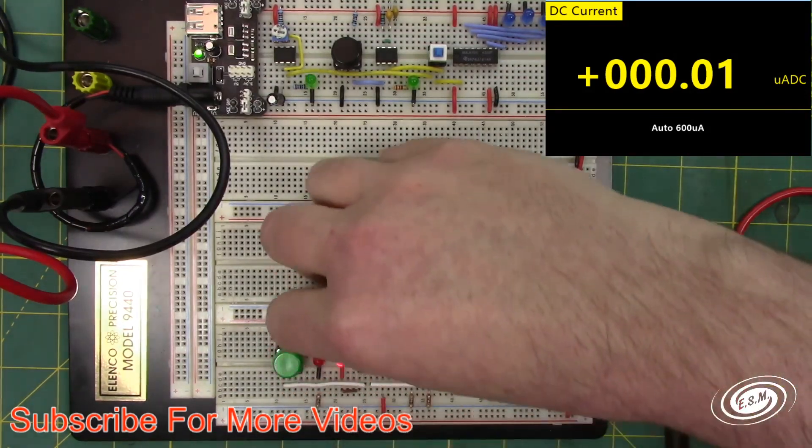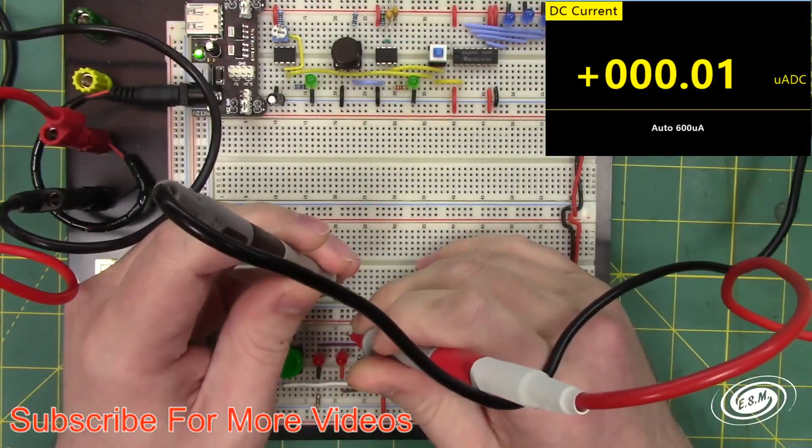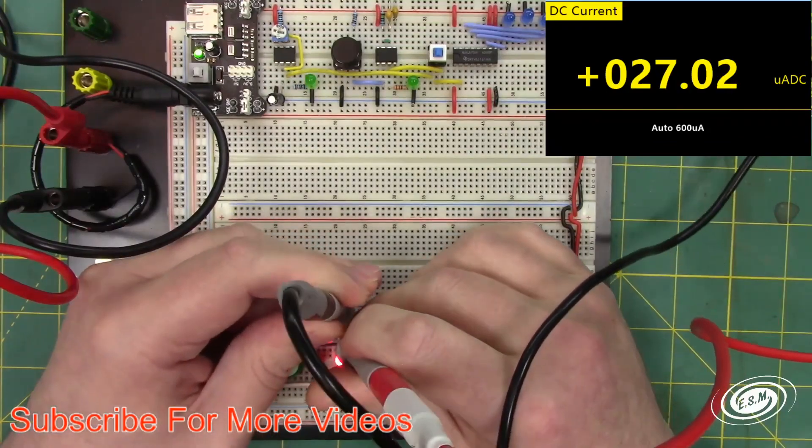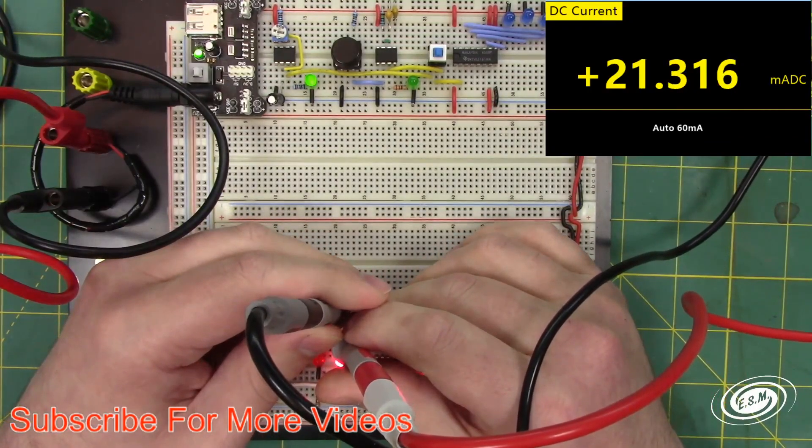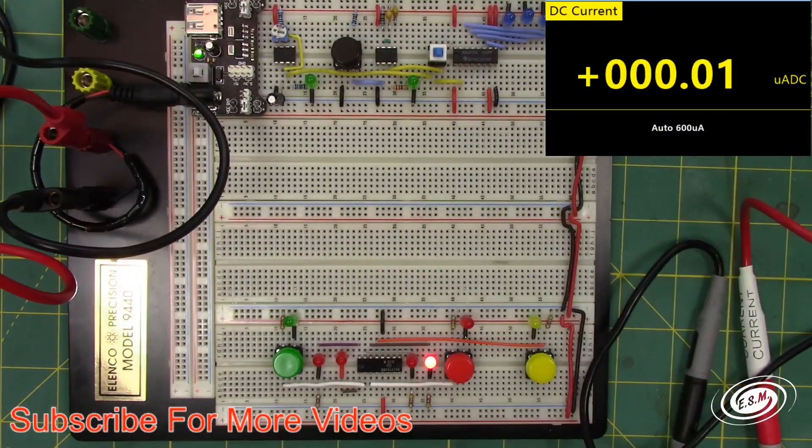But what would it be if we pulled out this resistor? There. So we have there, there. And 21 milliamps. So definitely don't do that. Definitely put a resistor in line.